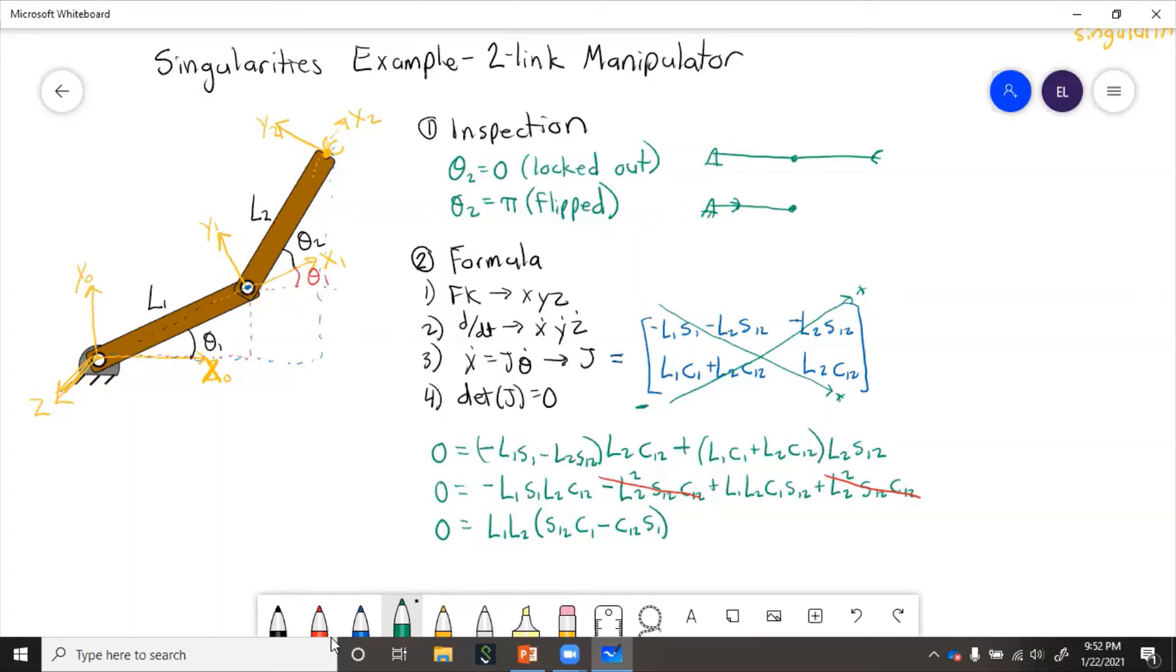So for this we can use a trig identity. Identity we'll use is sine of a minus b.